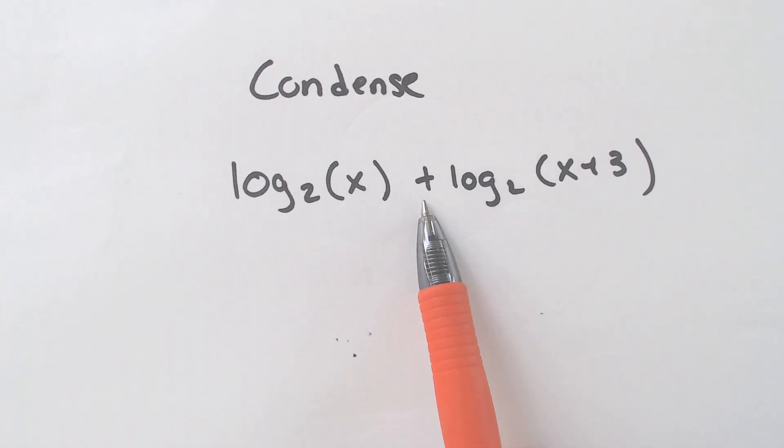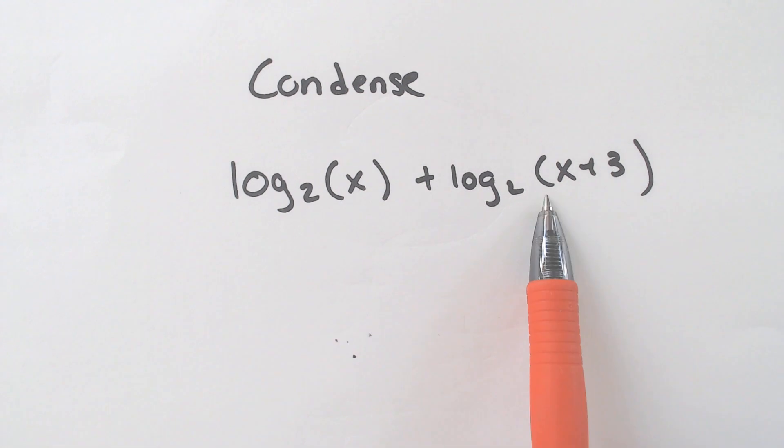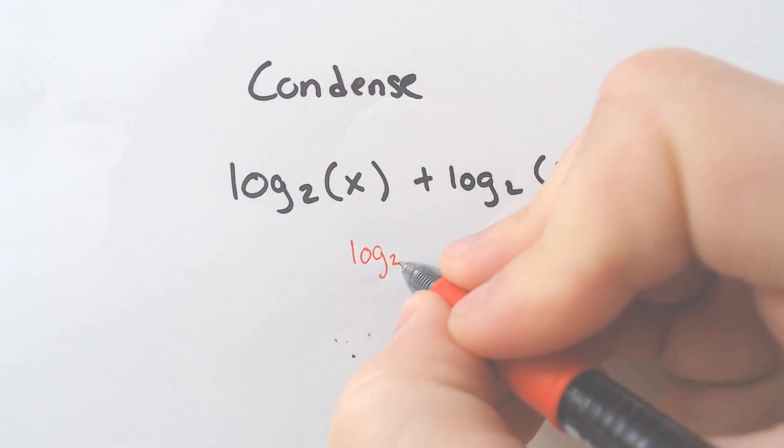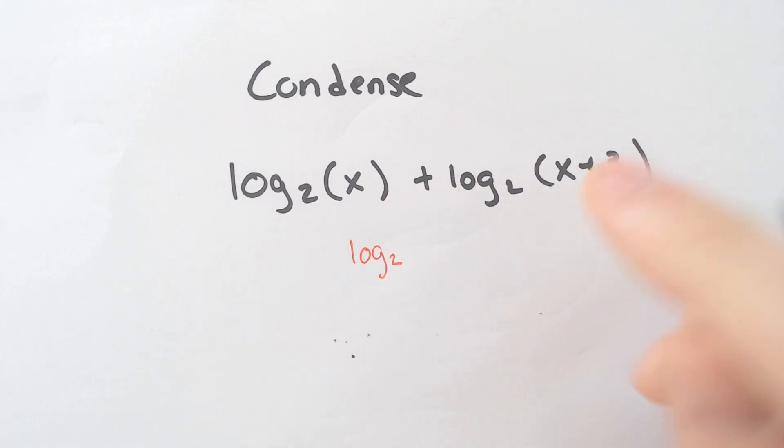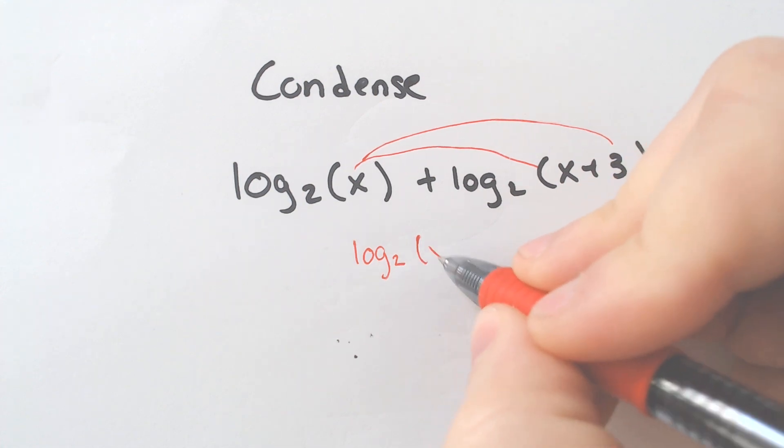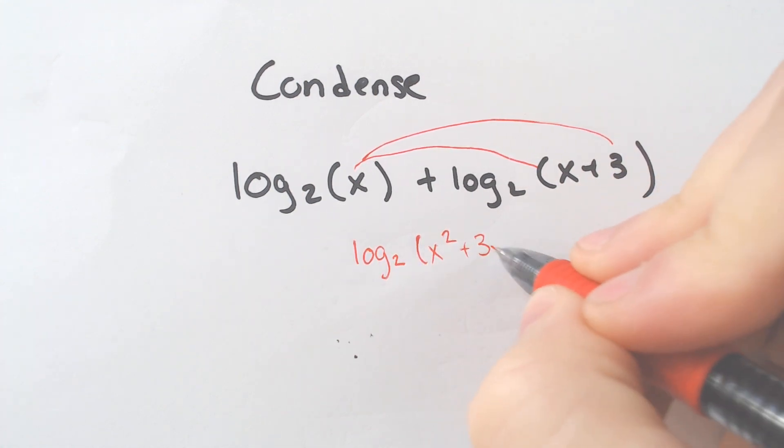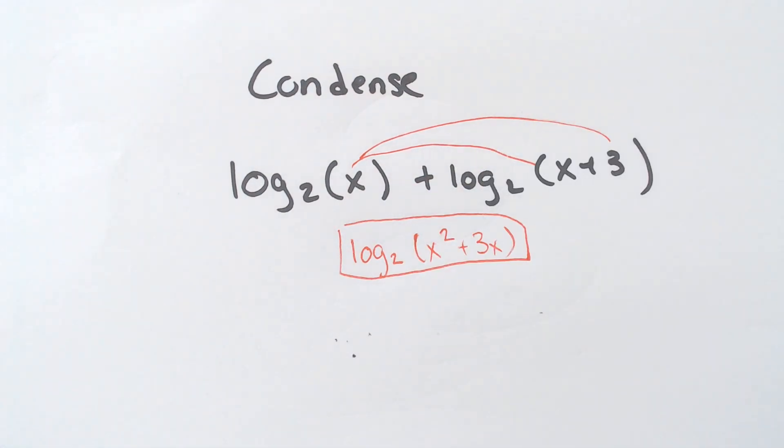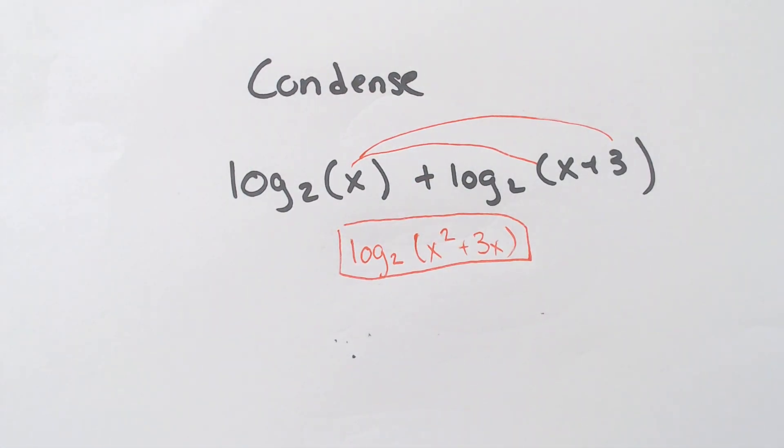If there is a plus sign in between them, that means you multiply them to condense them into one log. So we're going to end up with one log, base two, and we have to multiply these two things together. Well, if we multiplied x with x plus 3, you would distribute and get x squared plus 3x. And that, ladies and gentlemen, is the condensed form of that log.